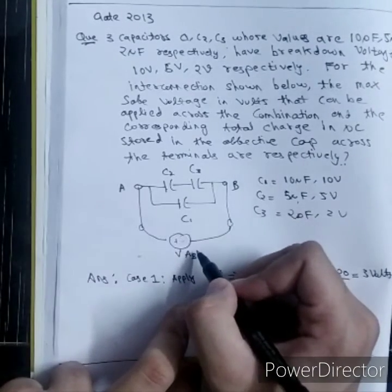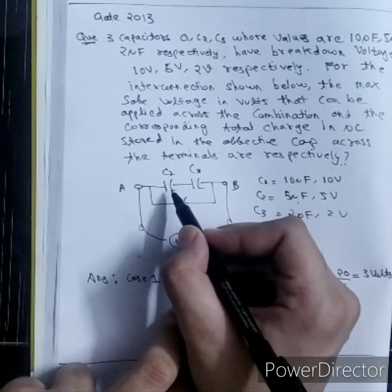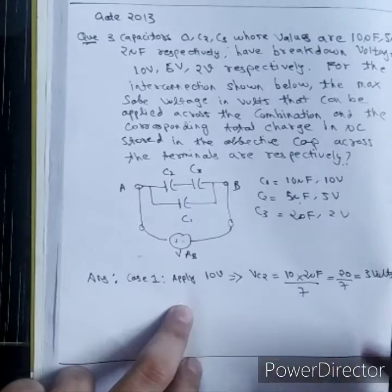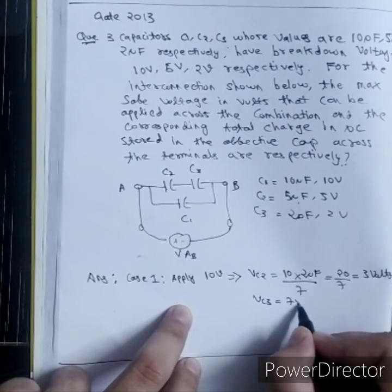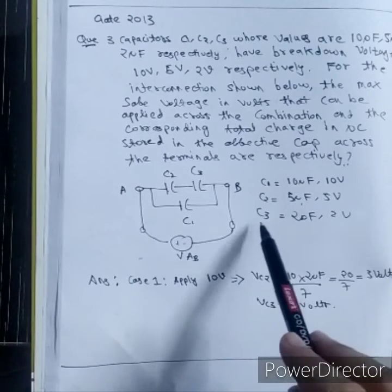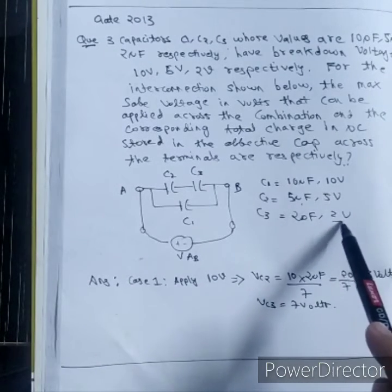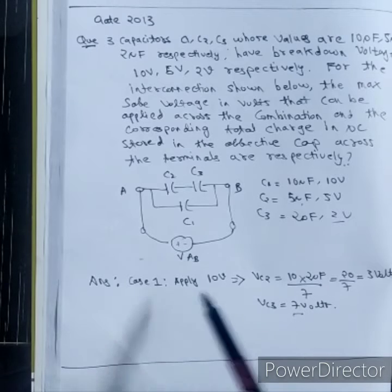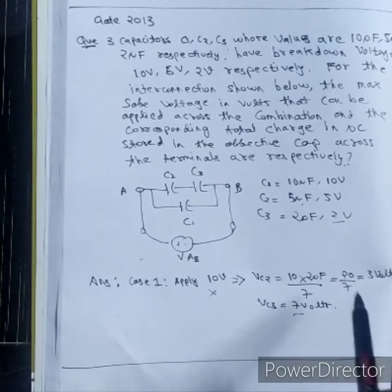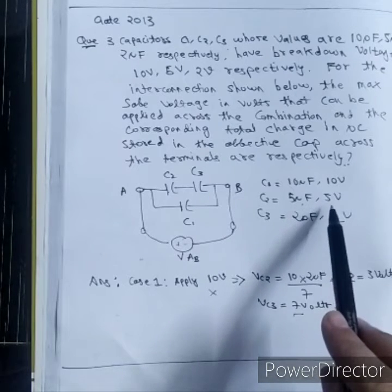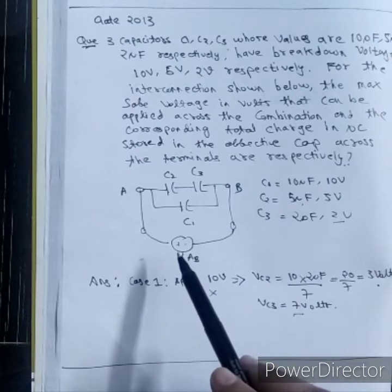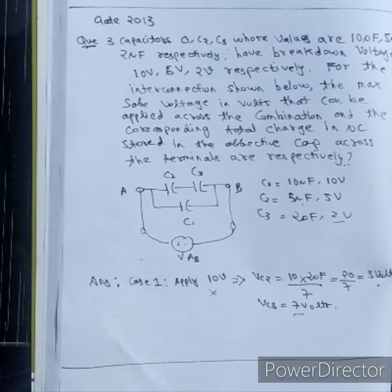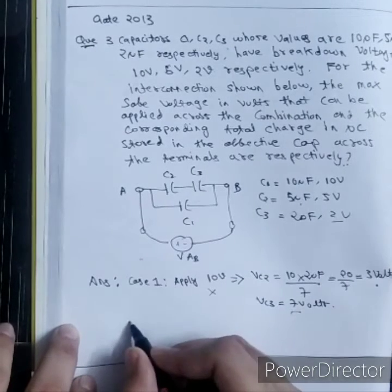If I apply 10V here, approximately 3V is dropping across C2, so the rest 7V will drop across C3. VC3 will be 7V. C3 can have a voltage maximum of 2V but I am applying 7V, so C3 will go to breakdown. 10V is not a safe voltage. If you check for C2, I can apply maximum 5V but I am giving here 3V, so C2 will not go to breakdown but C3 will go to breakdown which is not our requirement. We have to find the safe voltage such that all the capacitors do not go to breakdown. 10V I can't apply.